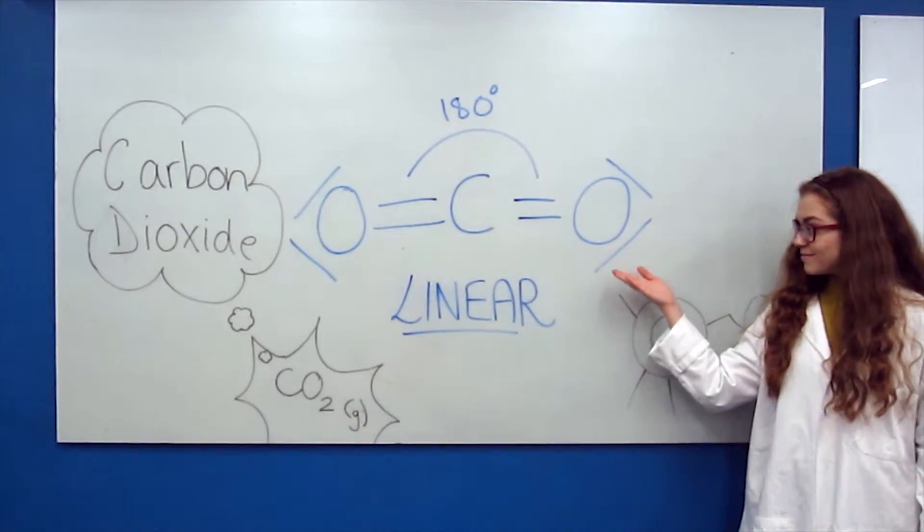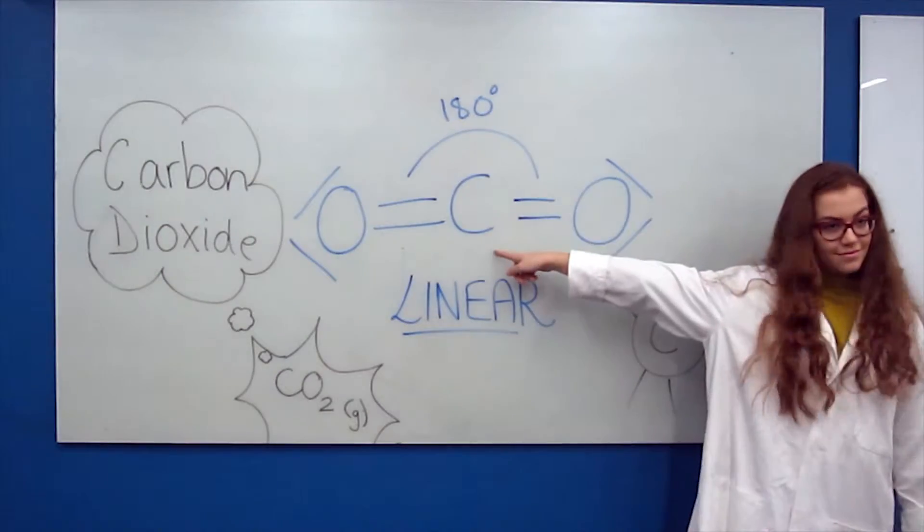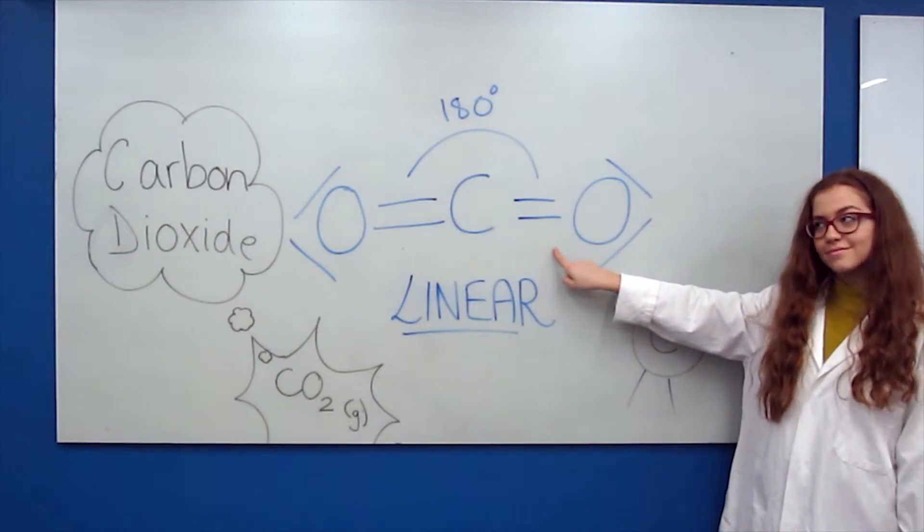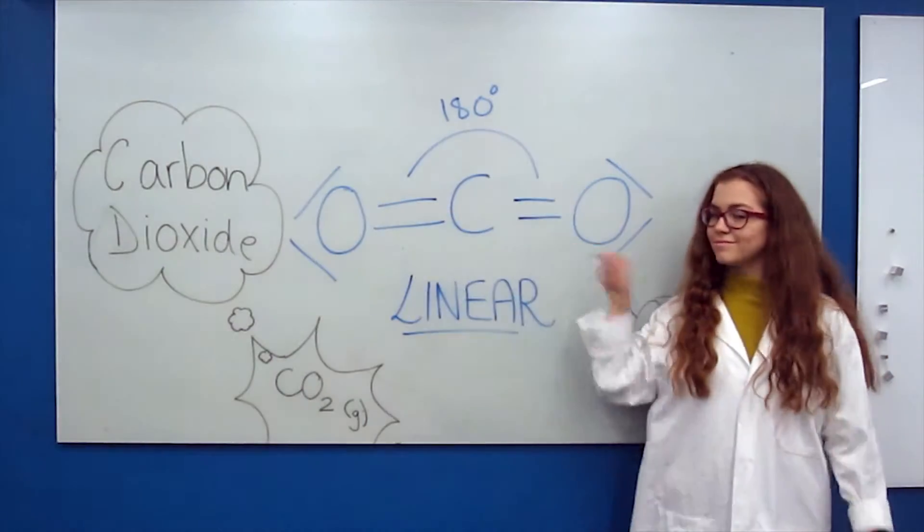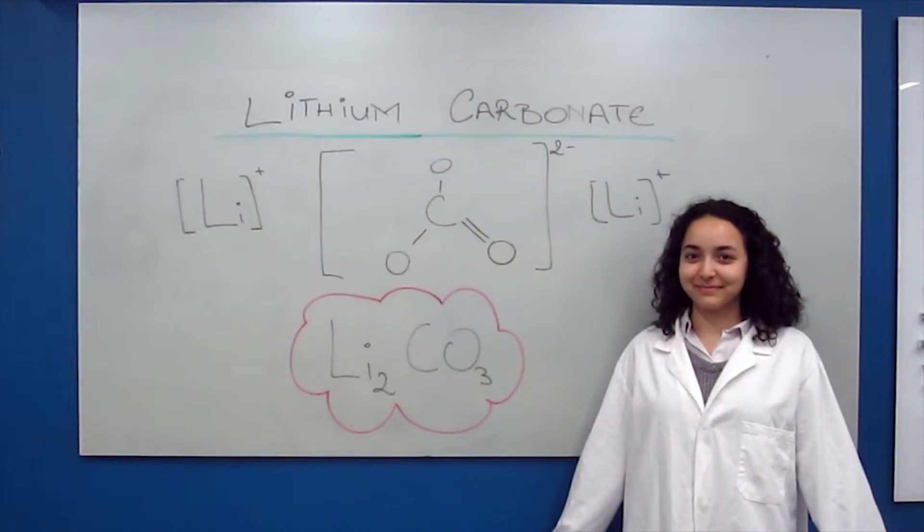This is a carbon dioxide molecule. As we can see from its Lewis structure, it has one carbon and two oxygens on either side. This makes it have an angle of 180 degrees, which corresponds to a linear structure.